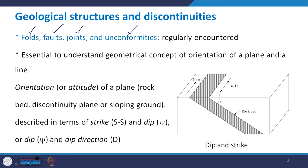It is very much essential for us to understand the geometrical concept of the orientation of a plane and a line before we learn about these geological structures. Because the moment we encounter any kind of geological structure and discontinuities, we need to represent them. Now these structures are 3-dimensional. In case if we have to represent them on a 2D plane, we need to have some quantities such that we are in a position to represent these 3-dimensional structures on a 2D plane. So for that, the graphical representation comes into picture.